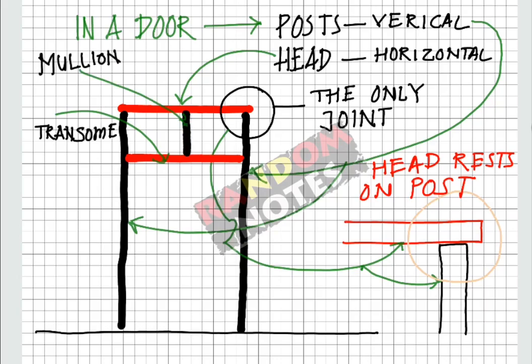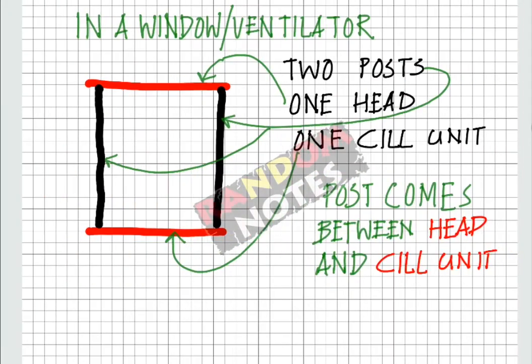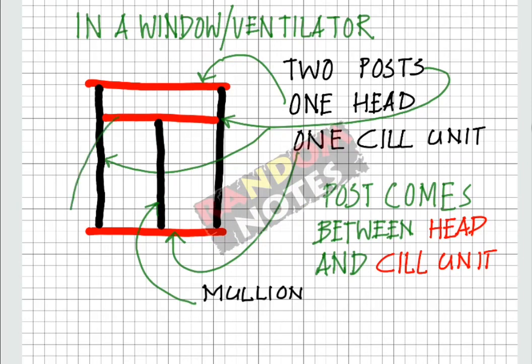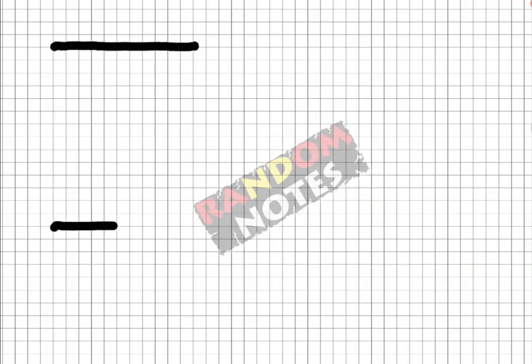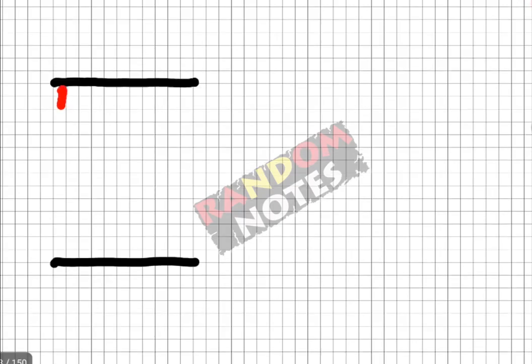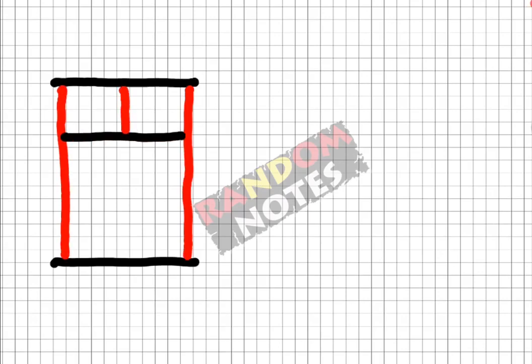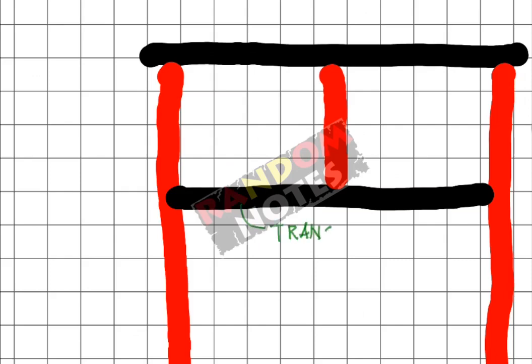You can introduce a transom or mullion in a window also to have a combination of operability. This is a window that has a transom on top to create a fanlight. There is also a mullion that divides the fanlight in two parts. The horizontal member is the transom and the vertical member is mullion.